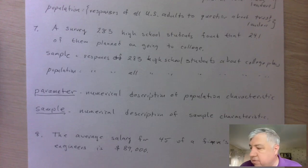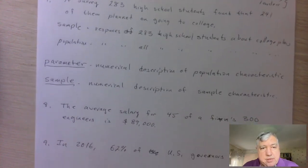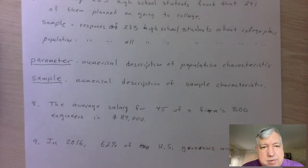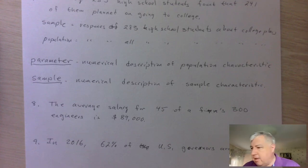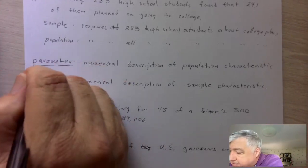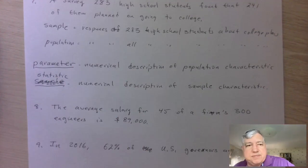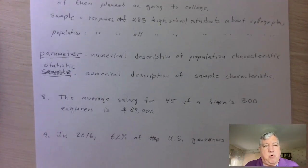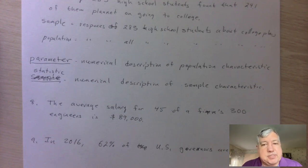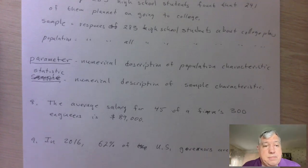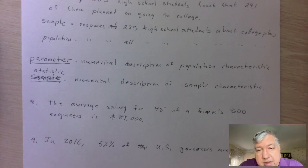Now two more important terms. We have population and sample, and now we want to talk about the numbers associated with these. That's a parameter versus a statistic. A parameter describes a population; a statistic describes a sample. Specifically, a parameter is a numerical description of a population characteristic, and a statistic is a numerical description of a sample characteristic. A good way to remember: parameter and population both begin with the letter P, and sample and statistic both begin with the letter S. Usually it's impossible to calculate the parameter directly, so we take a sample and compute the statistic.